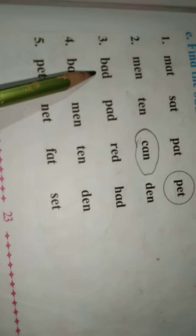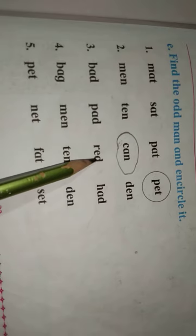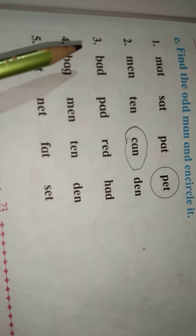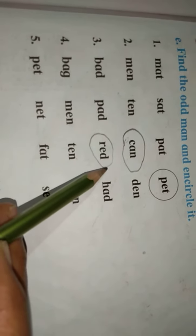Now third, here observe. Bad, pad, red and had. Bad, pad and had - bad and red is different pronunciation. So that word circle.